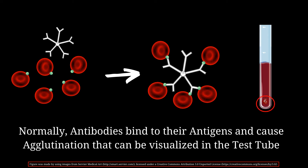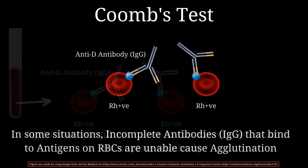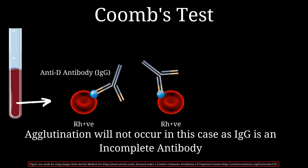Normally when antibodies bind to their antigens, agglutination takes place, which can be visualized in the test tube. In some situations, however, incomplete antibodies like IgG bind to their antigens on red blood cells and are unable to cause agglutination. For instance, if a patient has Rh positive blood group and anti-D antibodies are attacking the Rh antigen, agglutination will not occur because IgG is an incomplete antibody.